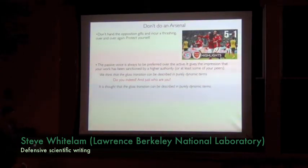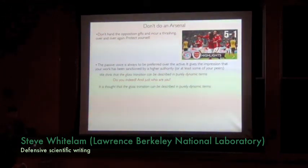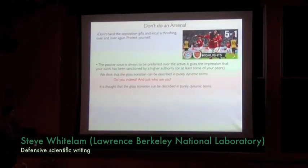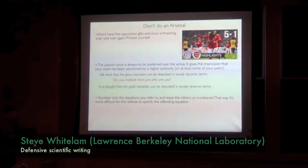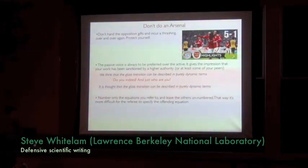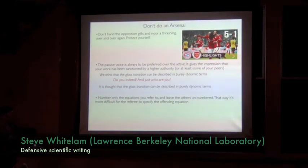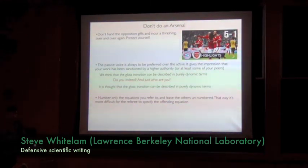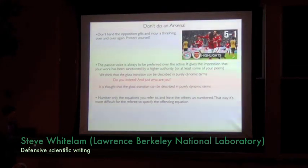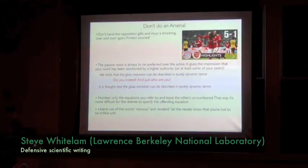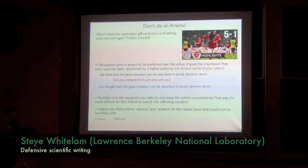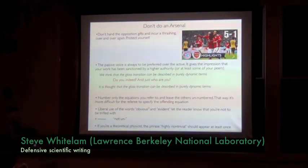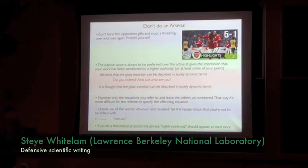So if you work with mathematics, with equations, you can consider numbering only those you refer to leaving the others unnumbered. That way, it's more difficult for the referee to specify what's wrong with those that come between. Frequent use of words like obvious let the reader know that you're not to be trifled with. You could consider also replacing nothing at all with your favorite double negative and if you're a theorist, the phrase highly non-trivial should appear at least once in your document.